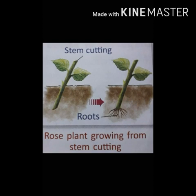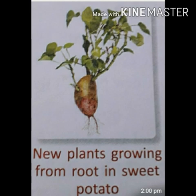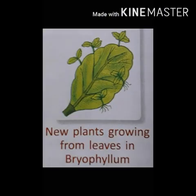Plants like bougainvillea, rose, hibiscus, and sugarcane grow from cuttings of stems, as you see in the picture of a rose plant growing from a stem cutting. Onion, ginger, and potato are underground stems. They also have stored food in them. These stems bear buds from which new plants can grow, as you see in the picture of new potato plants growing from eyes. The roots of sweet potato can also grow into new plants. The leaves of bryophyllum and begonia give rise to new plants — leaves develop buds on their margin. These buds develop into plantlets and separate from the parent plant to grow into new plants.